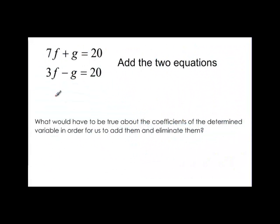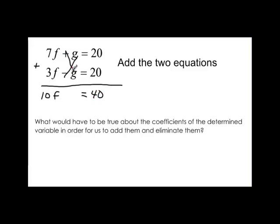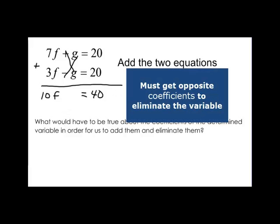This video will talk about solving systems of equations with elimination. First thing we want to do is understand the concept. If we add these two equations, 7f plus 3f would be 10f, and then positive g and negative g cancel each other out, giving us 0, and 20 plus 20 would be 40. Those cancel each other out, and that's what we want to see with elimination. If we have opposite coefficients, then we know we're going to be able to eliminate a variable.